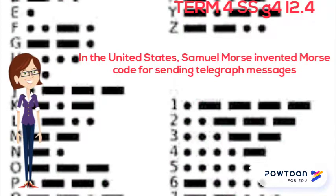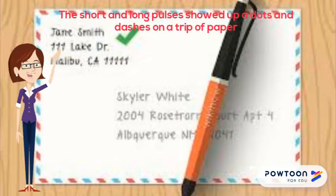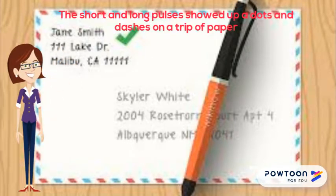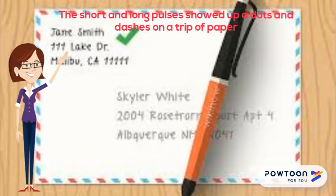In the United States, Samuel Morse invented Morse code for sending telegraph messages. The code consisted of short and long pulses of electricity along a telegraph wire. Each letter of the alphabet had a different code. The short and long pulses showed up as dots and dashes on a strip of paper. The person at the post office receiving the coded messages would then turn it into a written text that could be read.